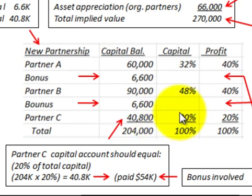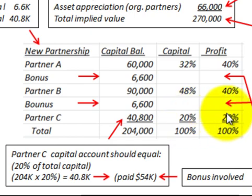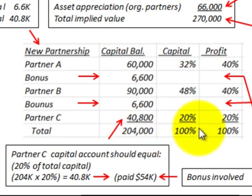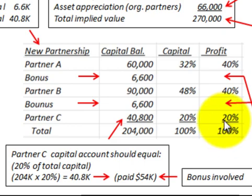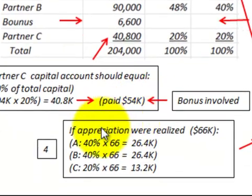Partner C gets 20% of capital and 20% of profit. The total capital is $204,000, representing 100% of capital, and the total profit allocation is also 100% based on the profit ratios of 40% to A, 40% to B, and 20% to C.